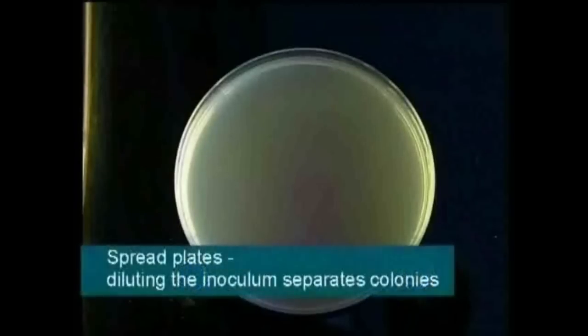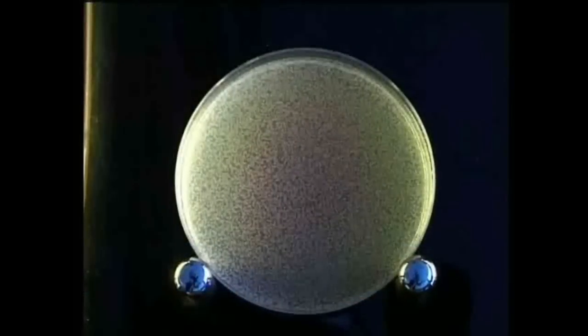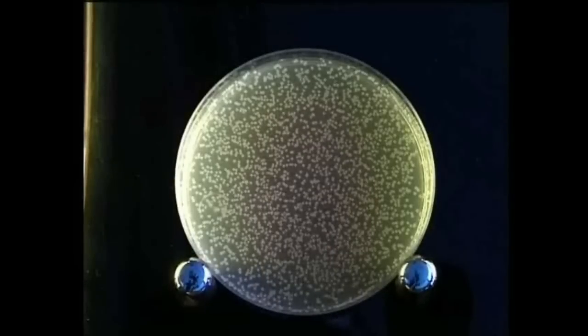A sheet of bacterial growth over the entire surface of the medium is called a lawn, or confluent growth.